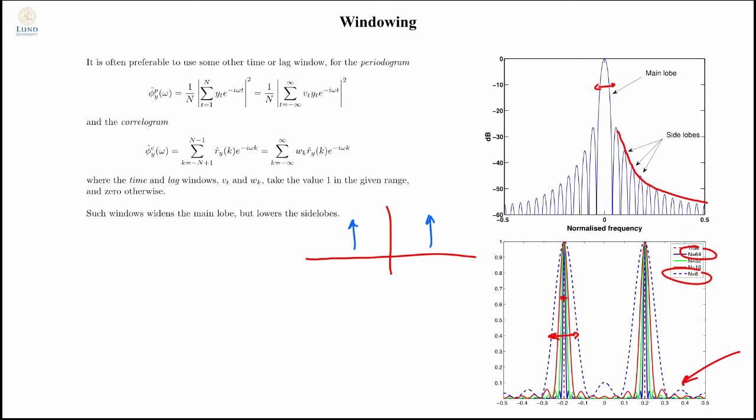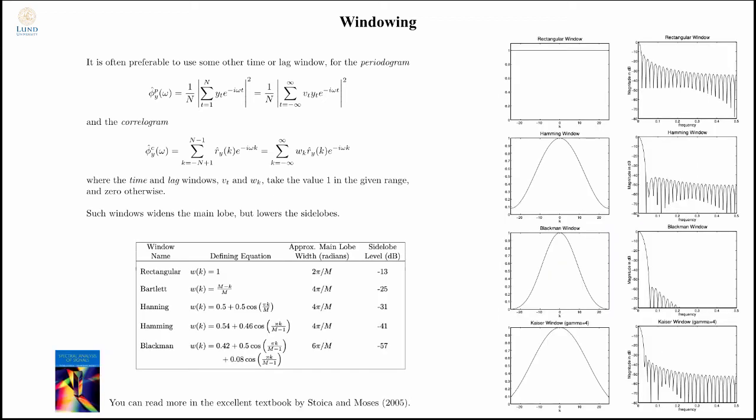One way to diminish this is to add other forms of windows. If I only plot the positive parts of the frequency, this is the rectangular window that I was looking at before. Here is an example of another window called the Hamming window. What you can see here is that the side lobes are much lower than in the rectangular window. But you should also notice that the main lobe is wider. Any form of windowing will cause the main lobe to widen. That means the resolution will always go down. There's no way to avoid that. If you apply a window, your main lobe will widen.